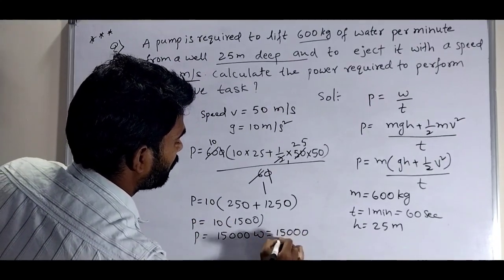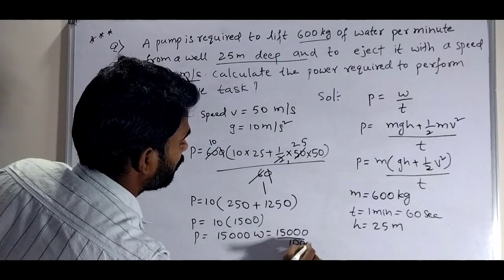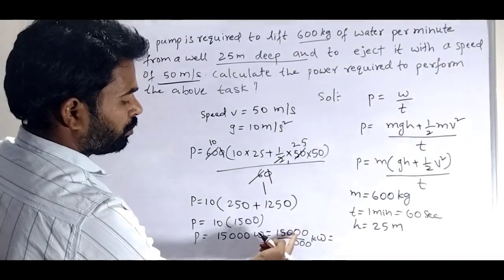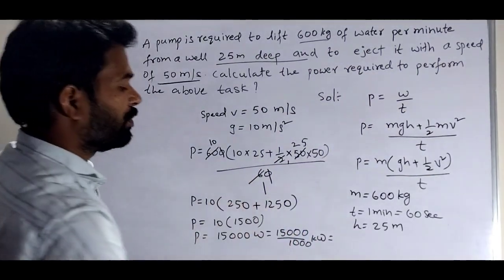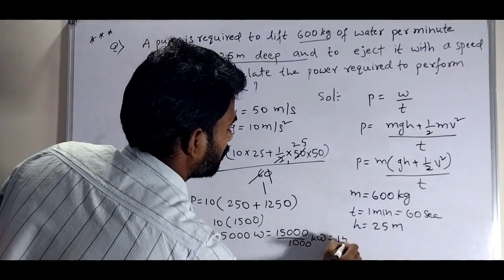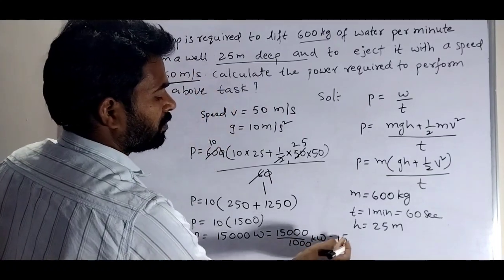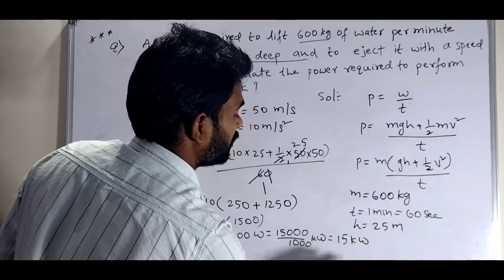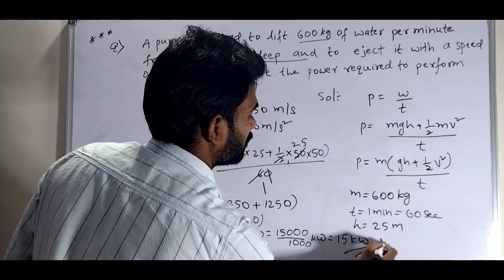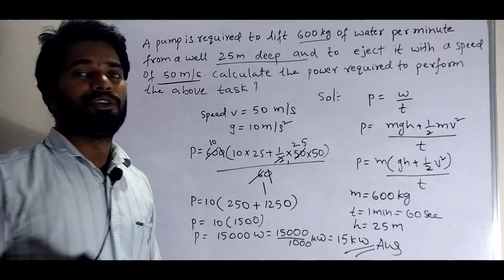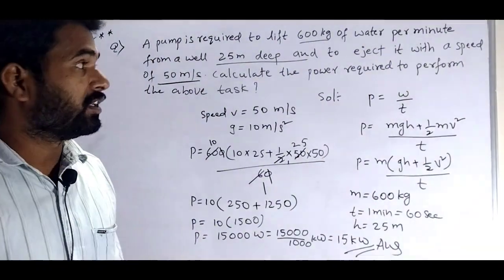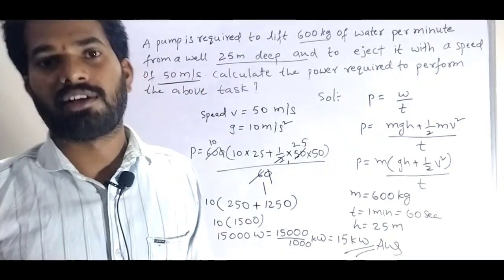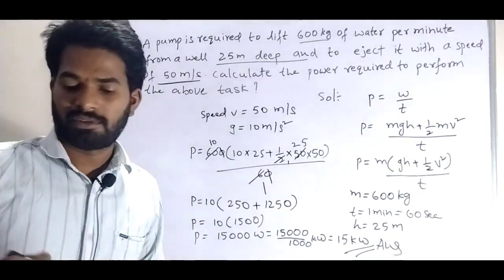15,000 divided by 1000 gives 15 kilowatts. This is our answer. Very important question - you will see these types of questions from work, power, and energy as long answer questions.